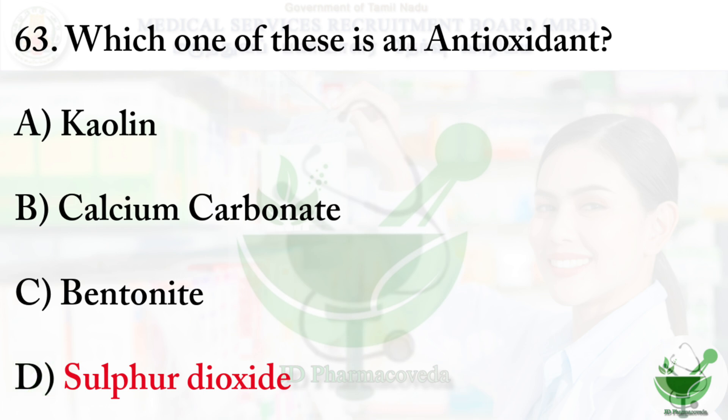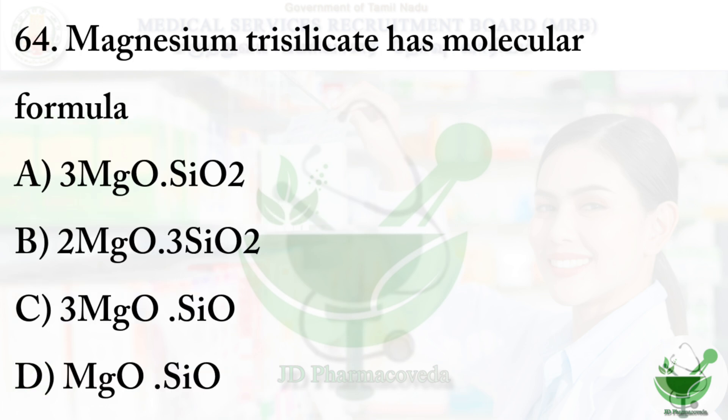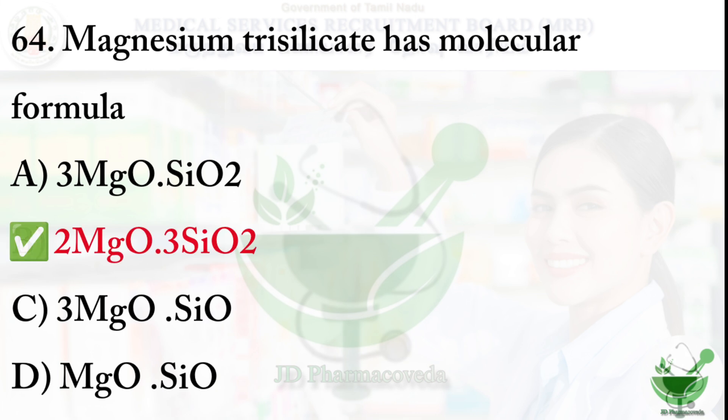Question number 64: magnesium trisilicate has the molecular formula — option A: 3MgO·SiO₂. Option B: 2MgO·3SiO₂. Option C: 3MgO·SiO. Option D: MgO·SiO. The right option is option B, 2 magnesium oxide and 3 silicon dioxide.